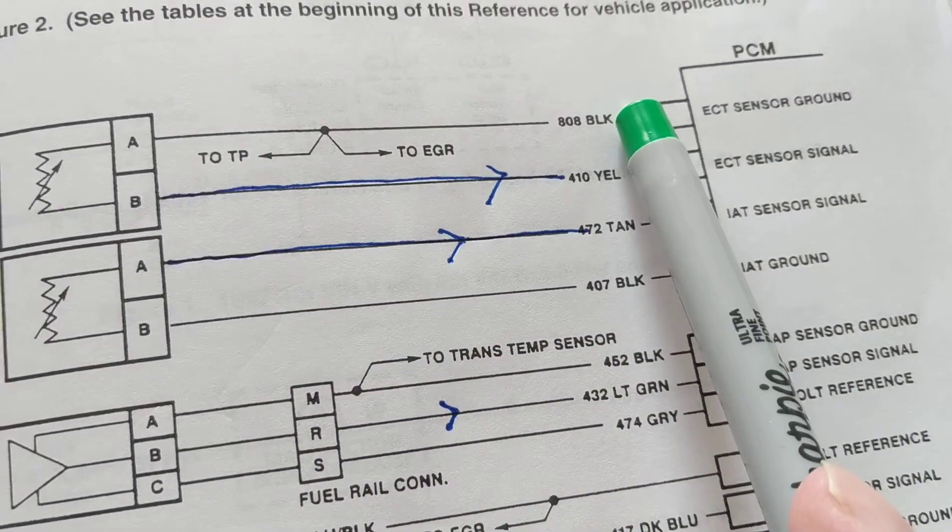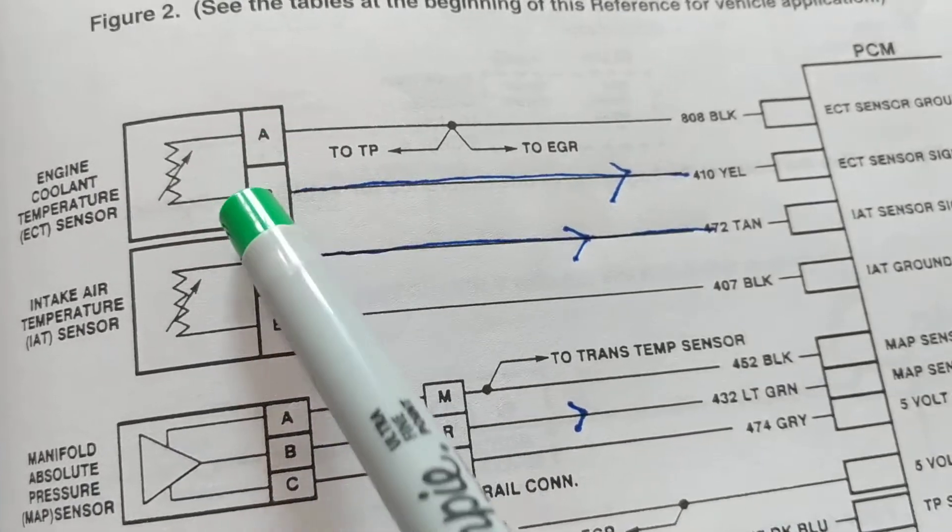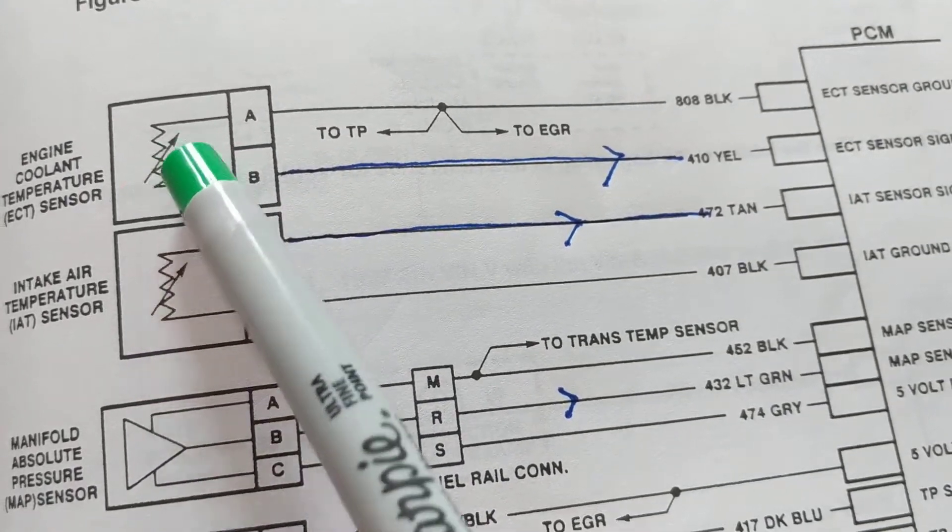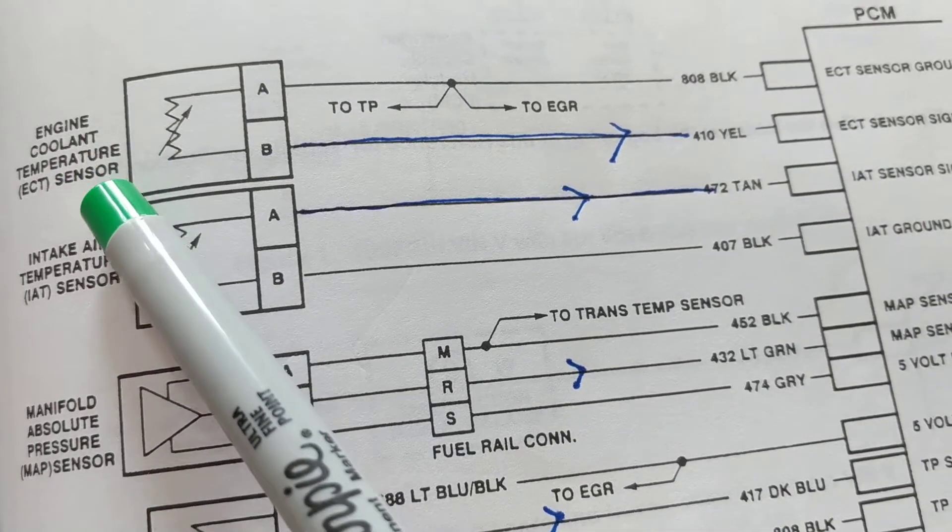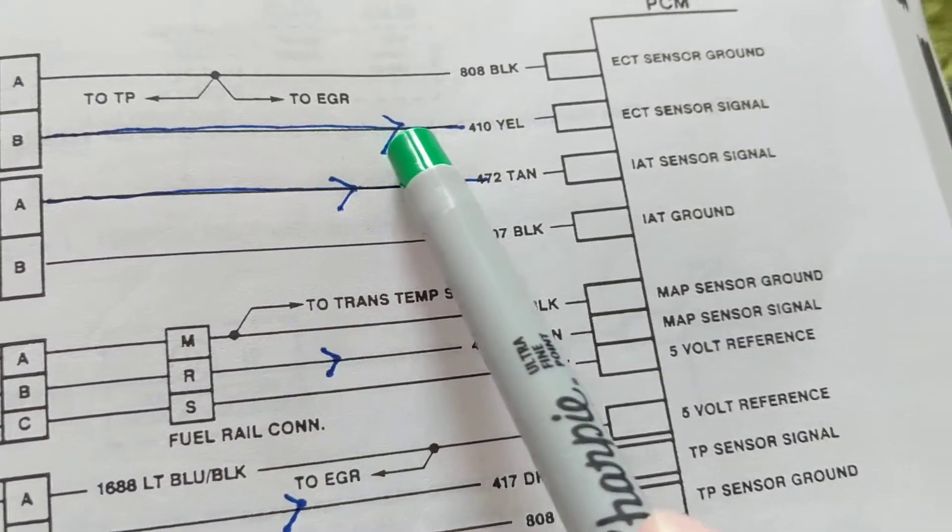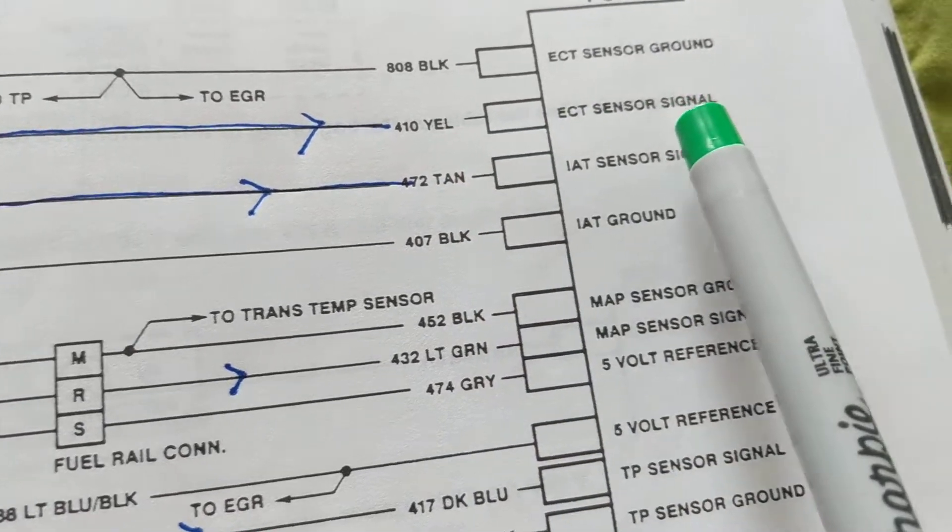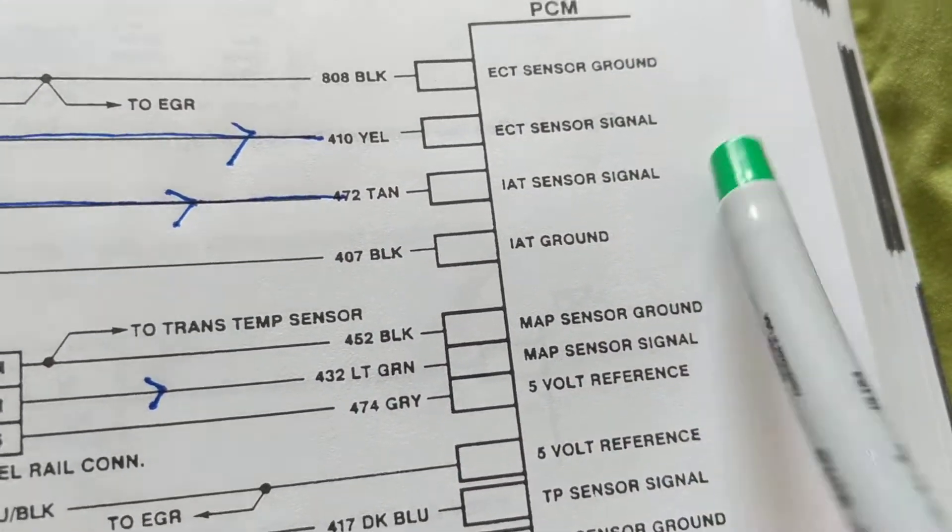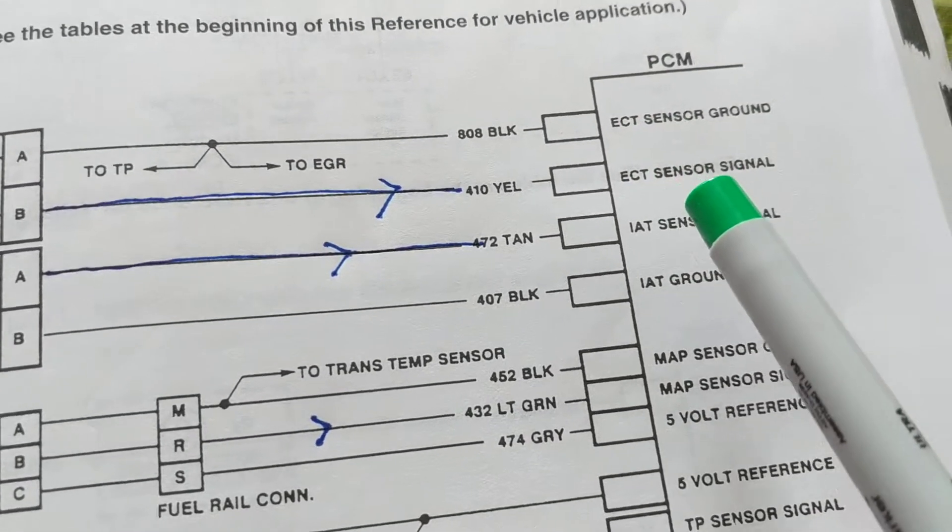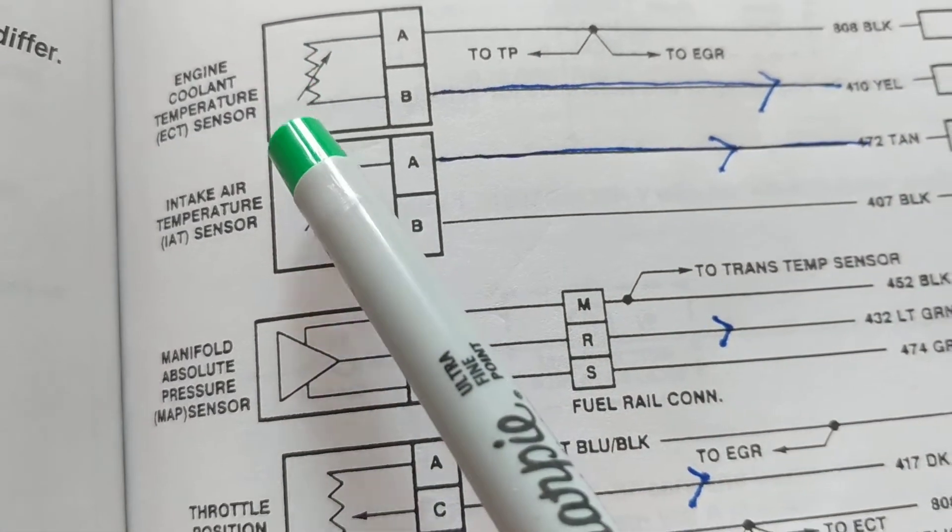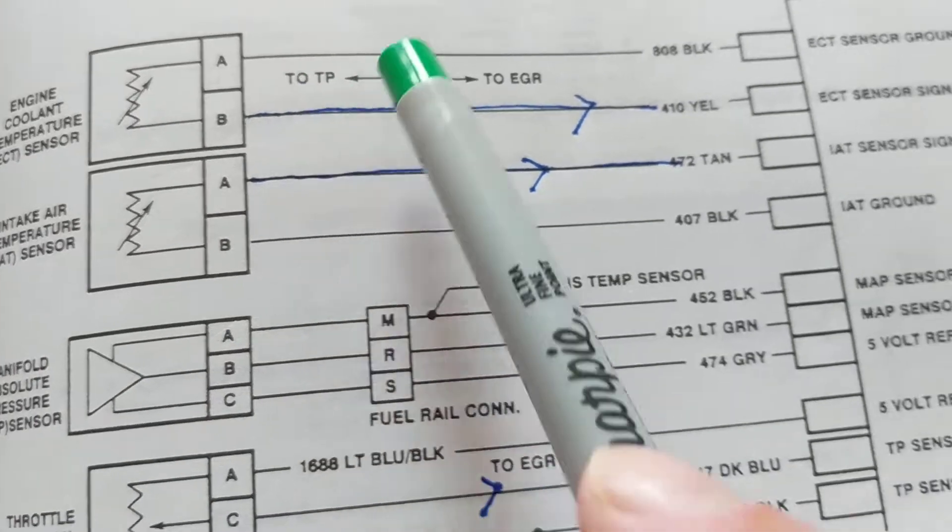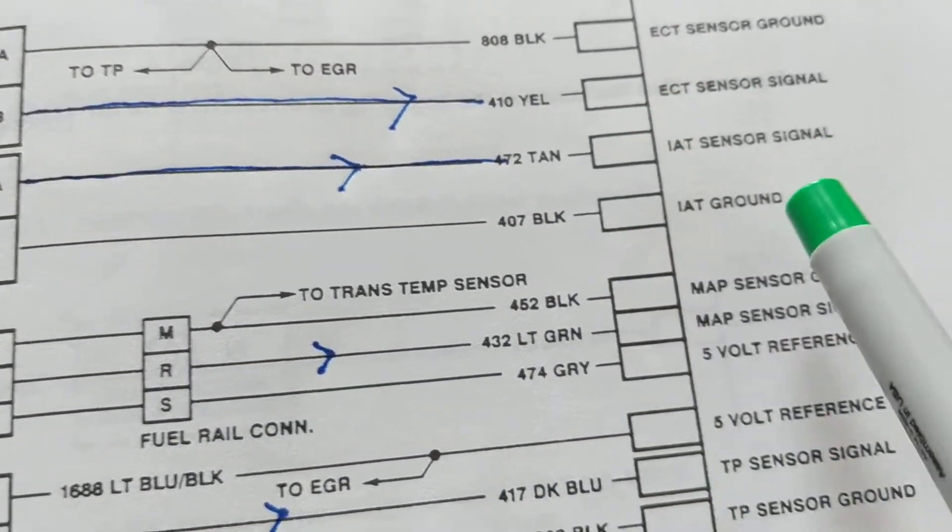One is a ground line. There are two connections. This is a resistor that changes value resistance according to cooling temperature. Therefore the signal line is this line, the yellow 410 going to the PCM. So if you see ECT, you'll understand it's engine cooling temperature sensor and there's only two wires involved.